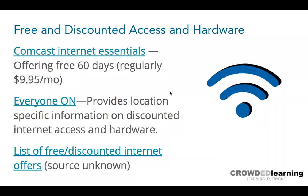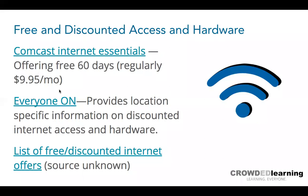One thing I wanted to point out regarding the access issue: Comcast Internet Essentials, which normally is $9.95 for people who qualify based on their economic status, is being offered free for 60 days during this time period. EveryoneOn is also a great resource — a website that provides location-specific information on discounted internet access and discounted hardware. You might want to check that out. Remember, in the Wakelet I provided the slides we're looking at right now, and all the items in the slides are hyperlinked so you can directly access them.